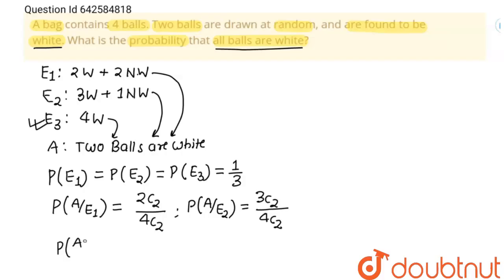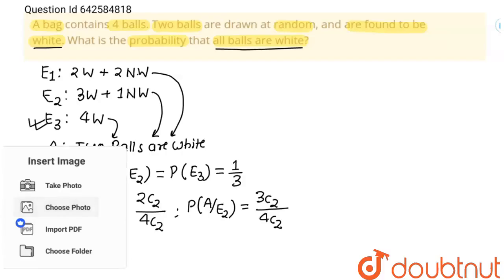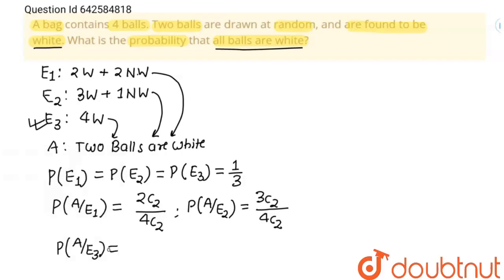For the third case, P(A|E3) is the probability of drawing two white balls from case three. In how many ways can we draw two white balls from four white balls? That is 4C2. The favorable outcomes and the sample space are both 4C2, so this equals one.